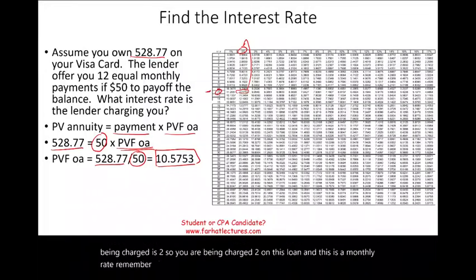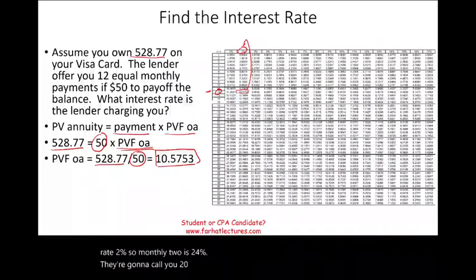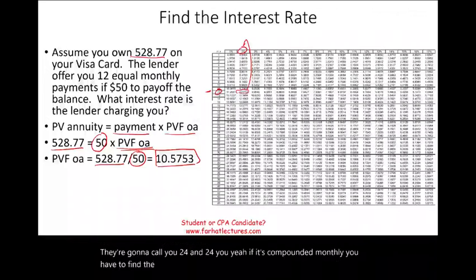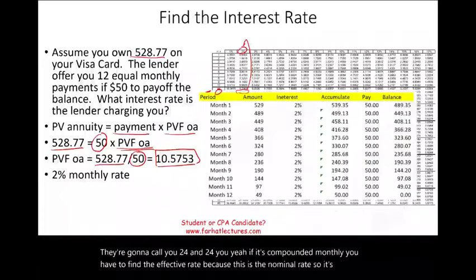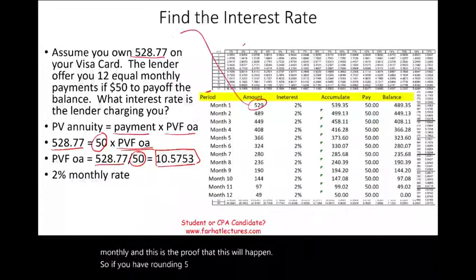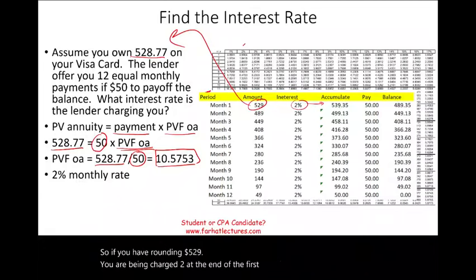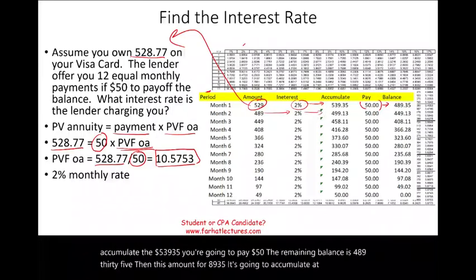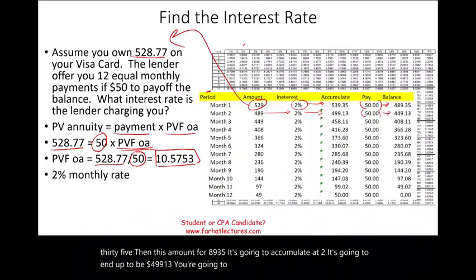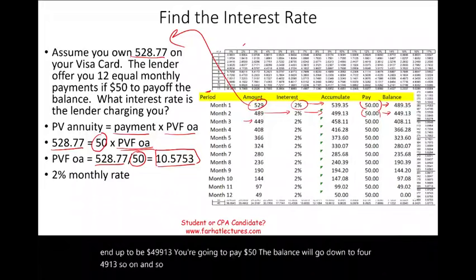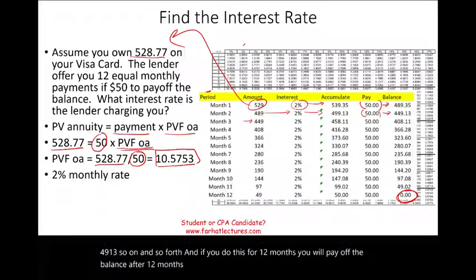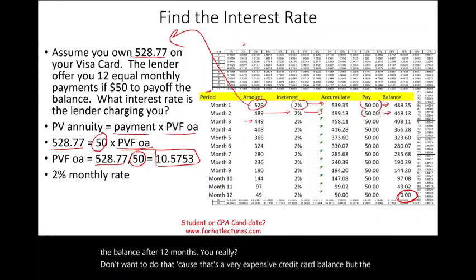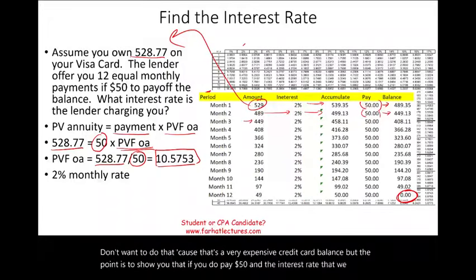This 2% is a monthly rate. If compounded monthly, the nominal rate is 24% and you'd need to find the effective rate. As proof: starting with $529 at 2%, after month 1 the balance grows to $539.35; you pay $50, leaving $489.35. That grows to $499.13; you pay $50, leaving $449.13. Continuing for 12 months, you pay off the balance completely. That's a very expensive credit card balance, but it proves the 2% monthly rate.